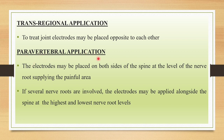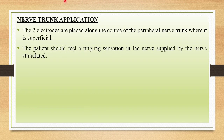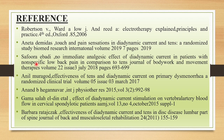For paravertebral application, the electrodes are placed on both sides of the spine at the level of the nerve root supplying the painful area. If several nerve roots are involved, electrodes are applied alongside the spine at the highest and lowest nerve levels. For nerve trunk applications, two electrodes are placed along the course of the peripheral nerve trunk where it is superficial, and the patient should feel a tingling sensation in the area supplied by the stimulated nerve.